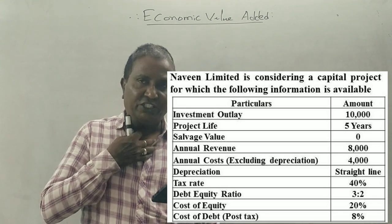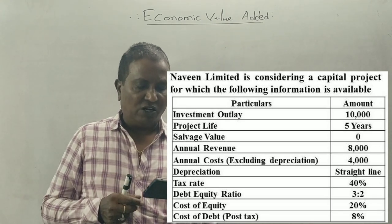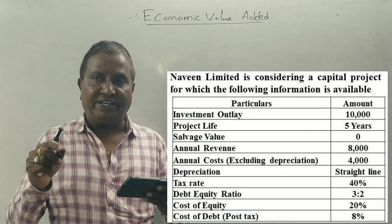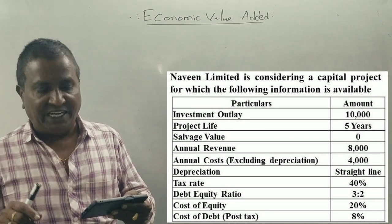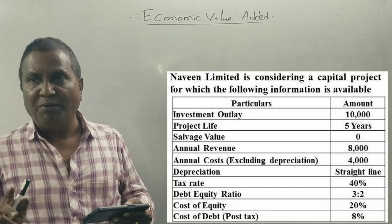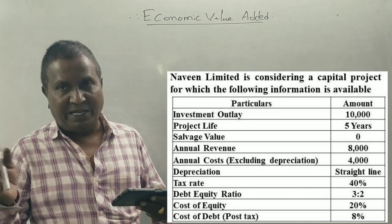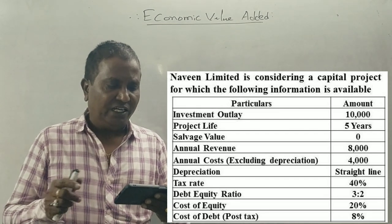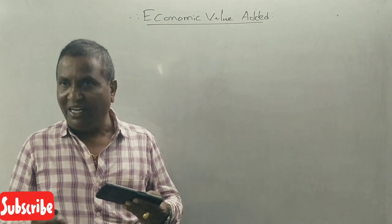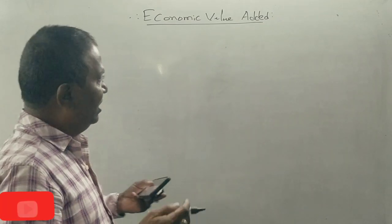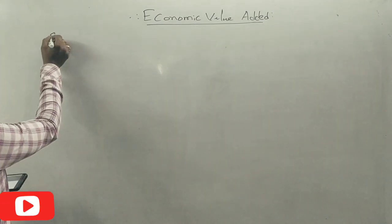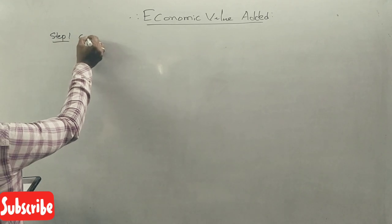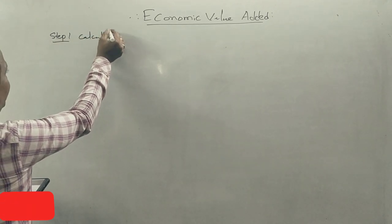Debt-equity ratio is 3:2. Cost of equity is 20%. Cost of debt post-tax is 8%. Economic value added is to be calculated. This is the first step — Step number 1: Calculation of NOPAT.